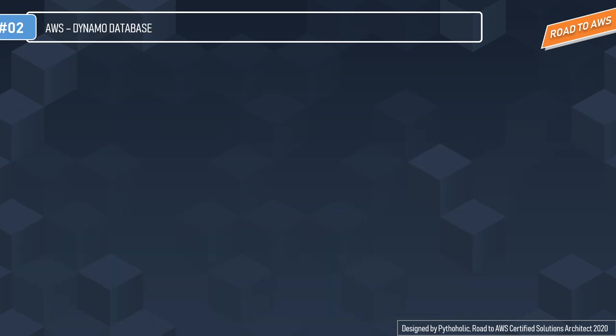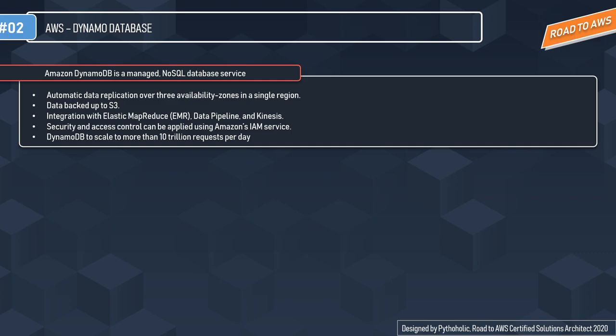Amazon DynamoDB is a managed NoSQL database service — a key-value and document database that delivers single-digit millisecond performance at any scale. It can act as a replacement for ElastiCache, though ElastiCache is known for sub-millisecond performance. DynamoDB is serverless with no servers to provision, patch, or manage, and no software to install or maintain. DynamoDB automatically scales tables up and down to adjust for capacity and maintain performance.